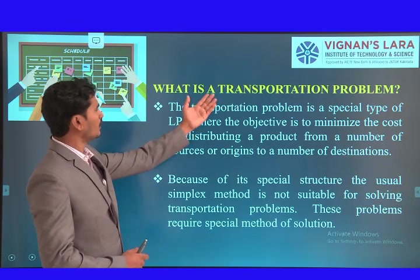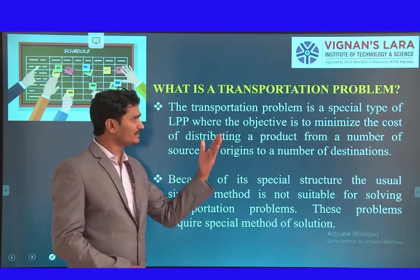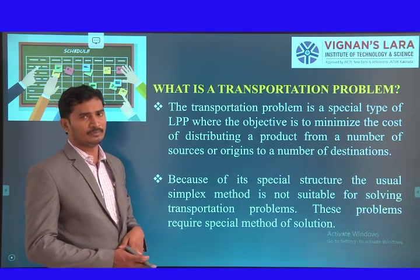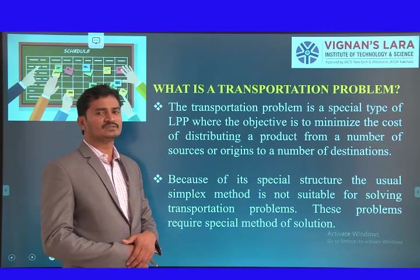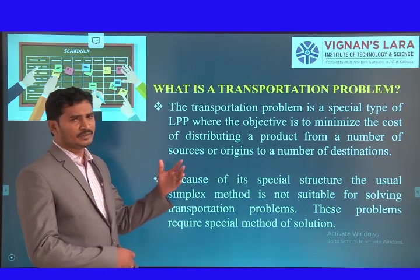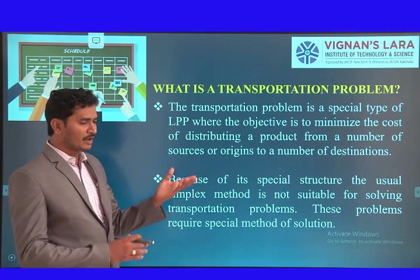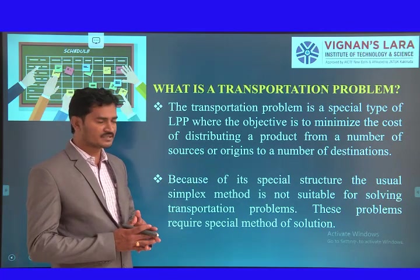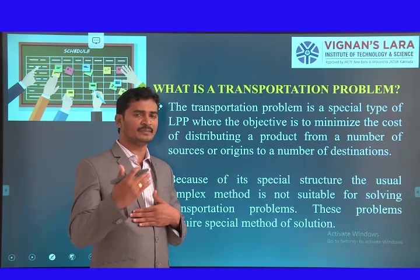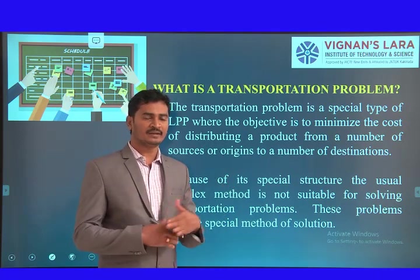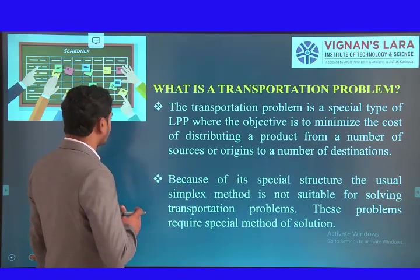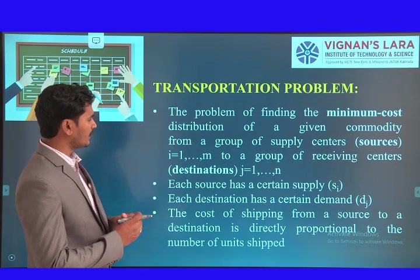Now coming to the transportation problem — what is the transportation problem? The transportation problem is a special type of linear programming problem. The main objective is to minimize the cost. It is difficult to solve by the simplex method. We have a number of sources and we have to transport the commodity from one supply station to another demand station based on the demand. Here we have to consider the unit cost and unit supply.